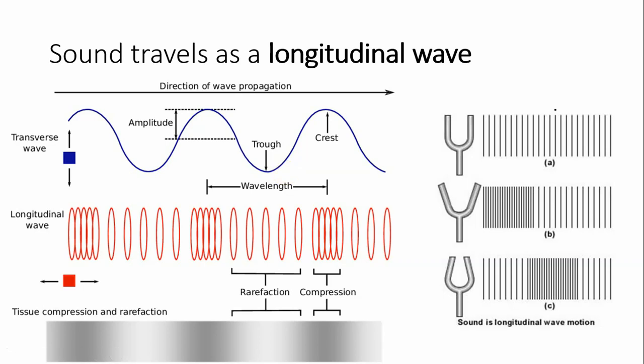In a longitudinal wave, the vibration of the particles of the medium is along the direction of the wave's motion. Longitudinal waves are readily formed on a stretchy spring or slinky by alternating compressing and expanding one end.